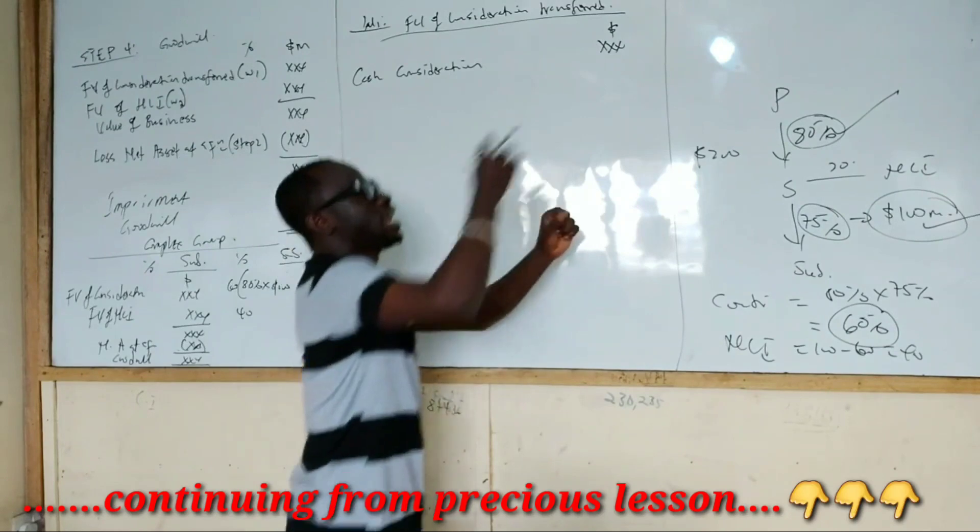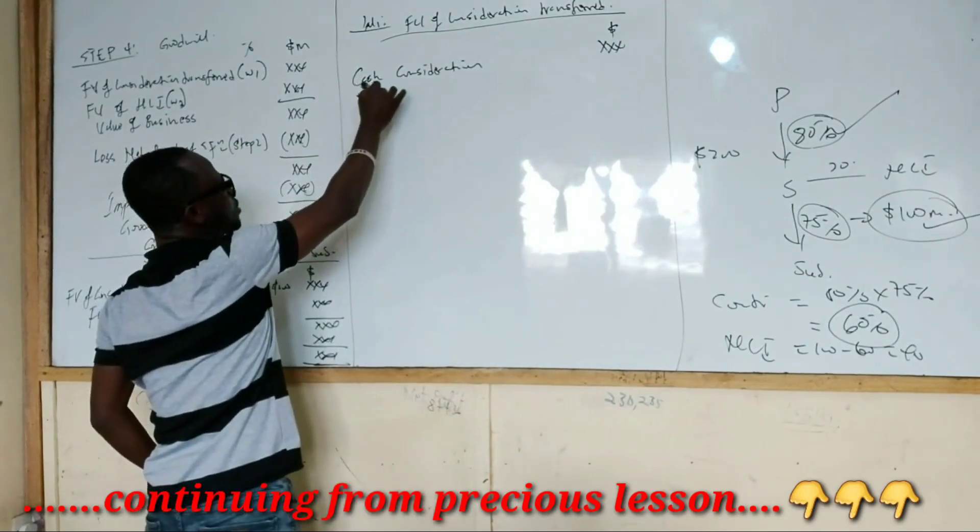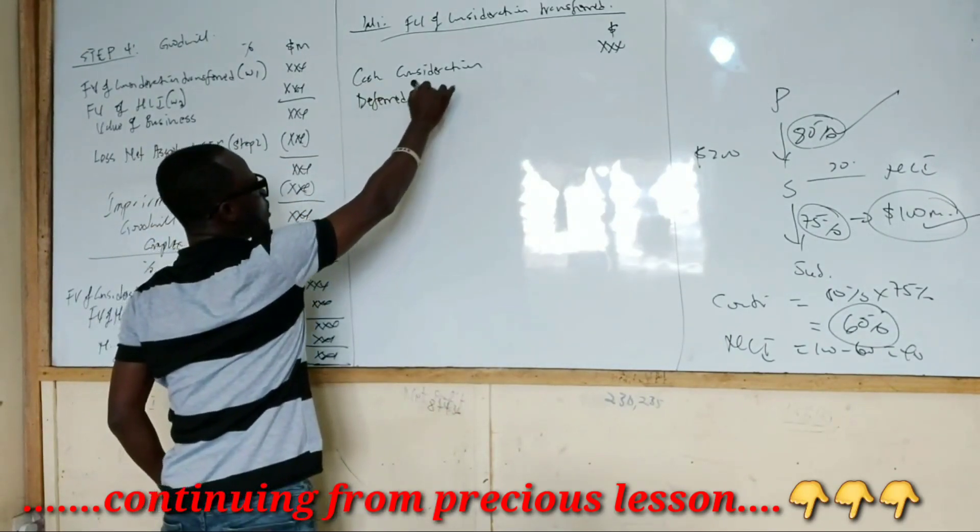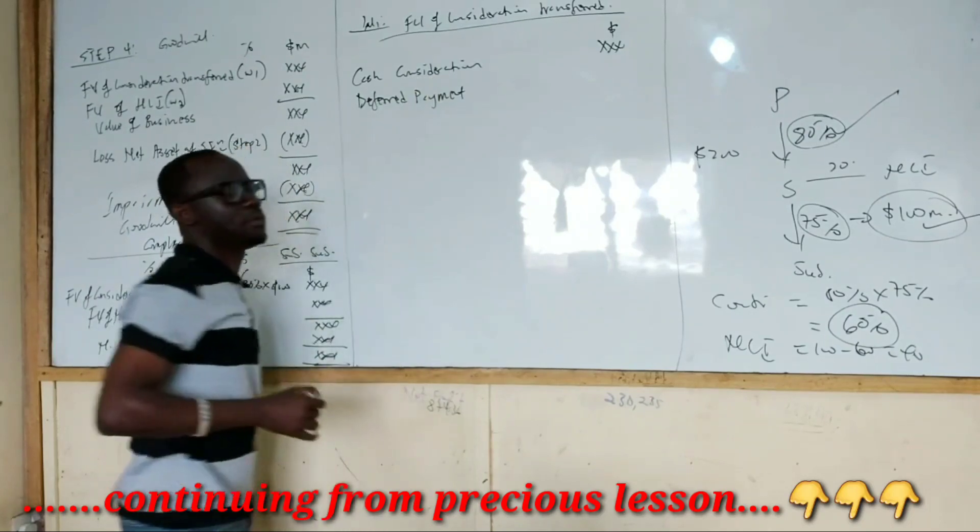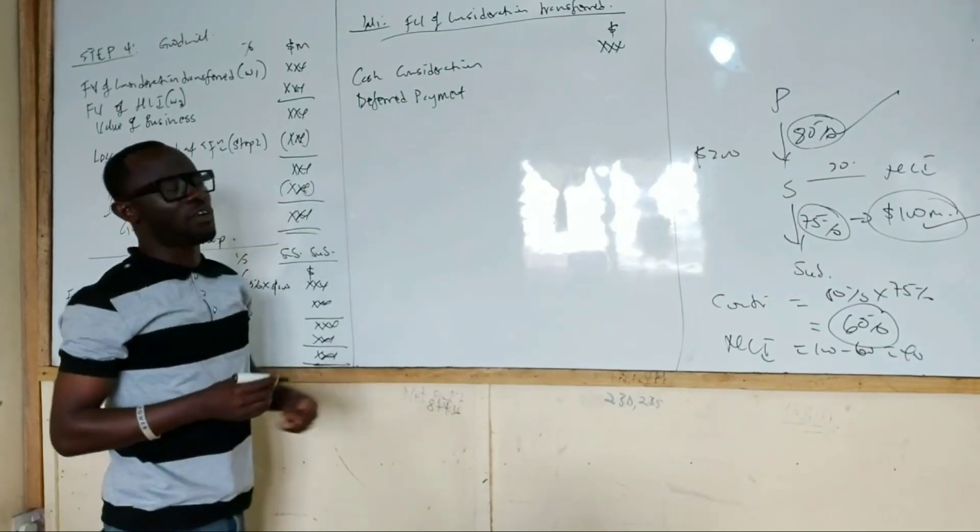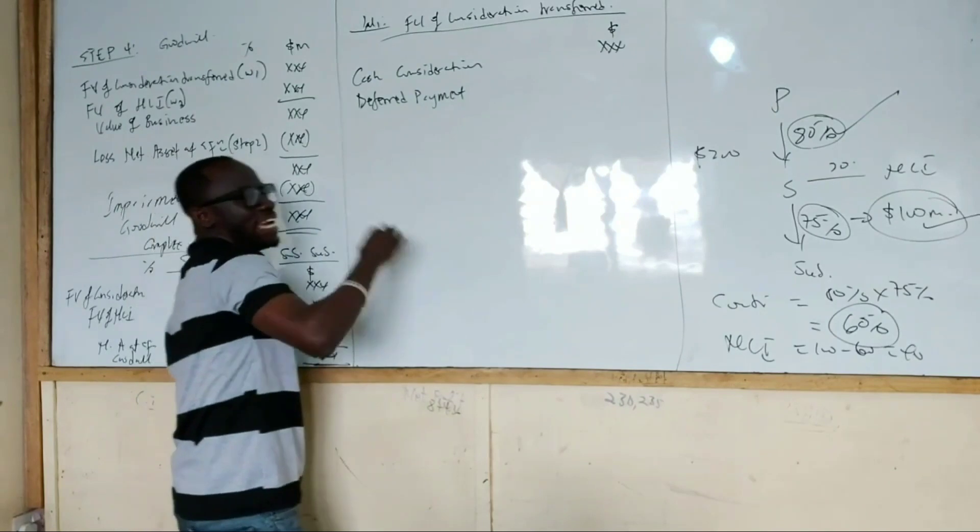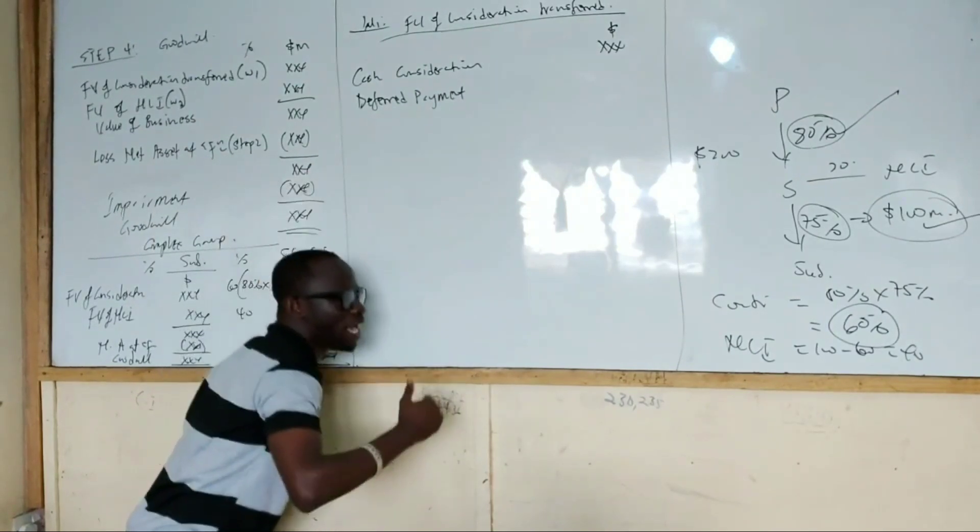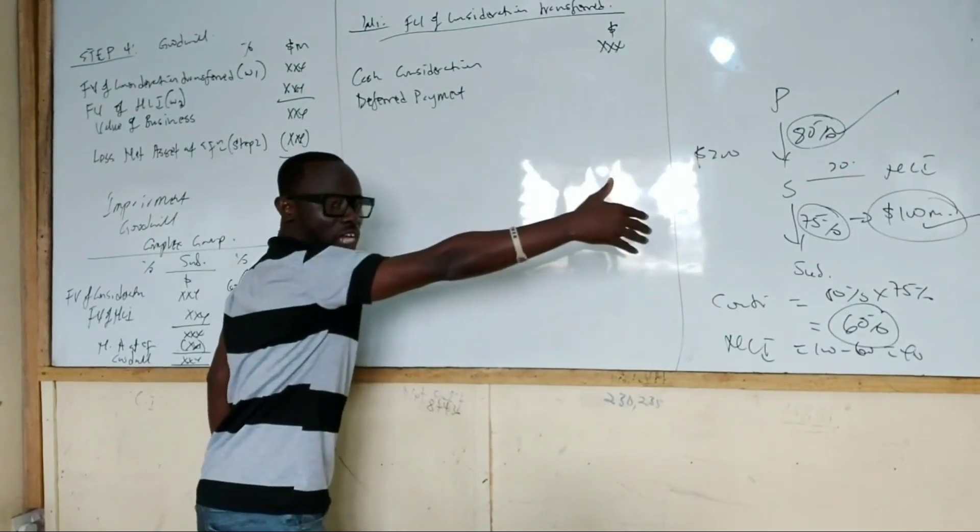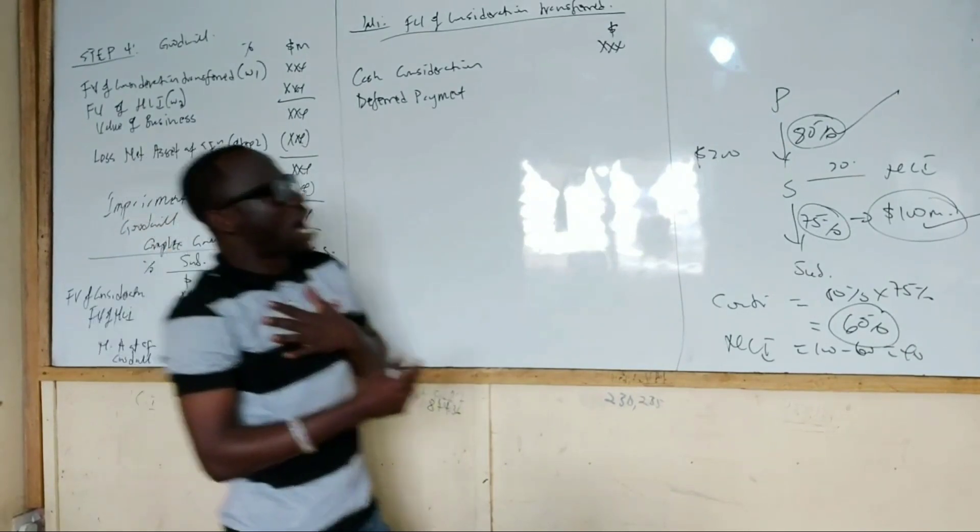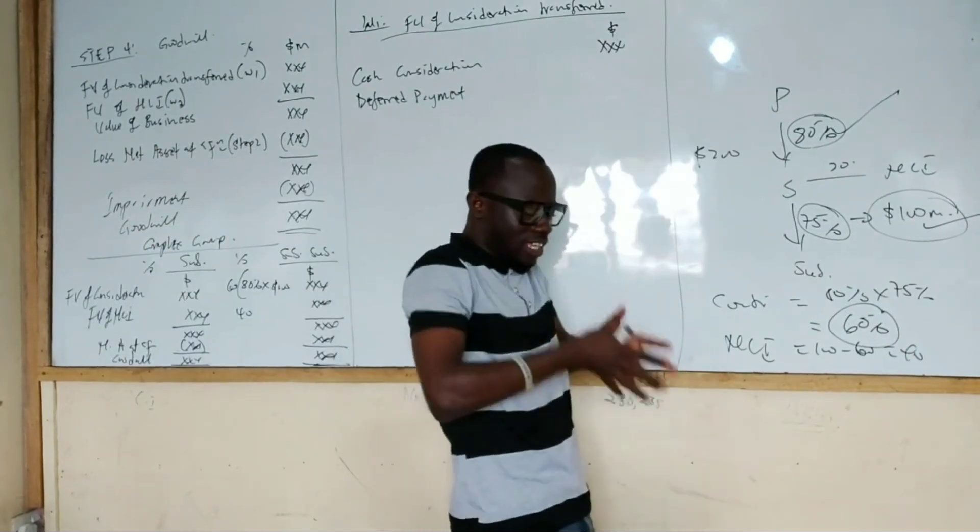But there is another one called deferred payment. Now, what is deferred payment? This is where the entity is bound to make some payments in the future. So even though they've acquired the company today, right now, this year, they may not have paid all the money.